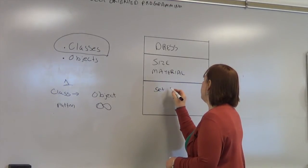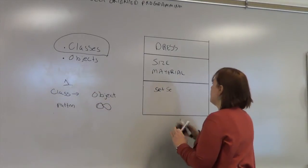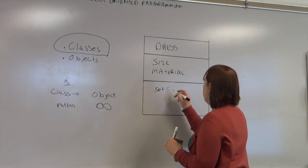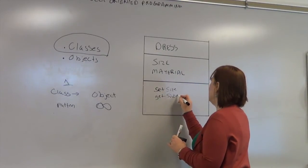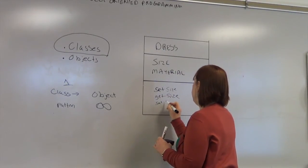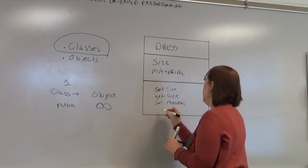And then you would have things that it could do. In this case, the program would set size. It's not what the dress could do. It's what the program would do if it was making a dress. Set size, get size, set material, get material.